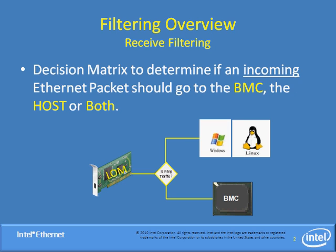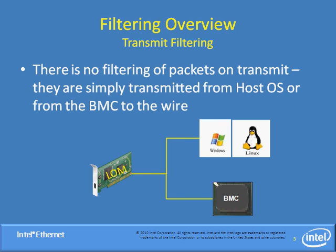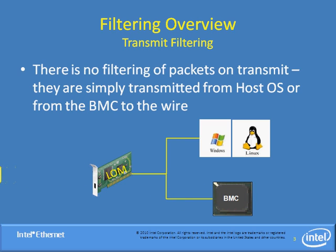Currently there is no filtering done on packets when they are transmitted from either the host or the BMC on an Intel Ethernet Server LOM. When packets are transmitted, any NIC offloads are used, but we don't actually look at the traffic to determine if it's special IPMI or host-based traffic — they're just transmitted out the wire.